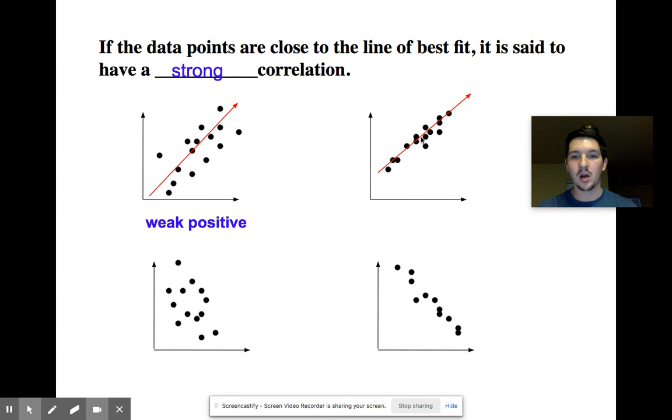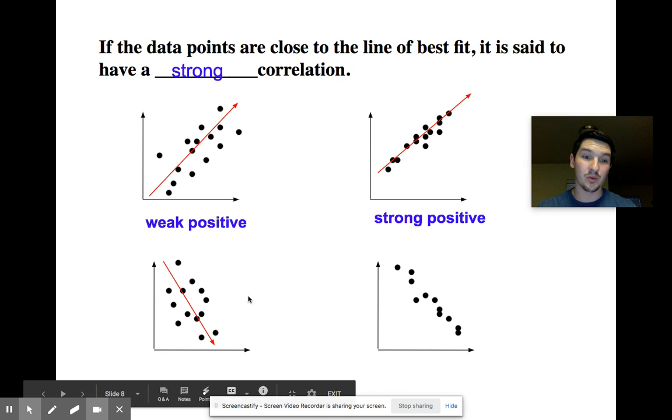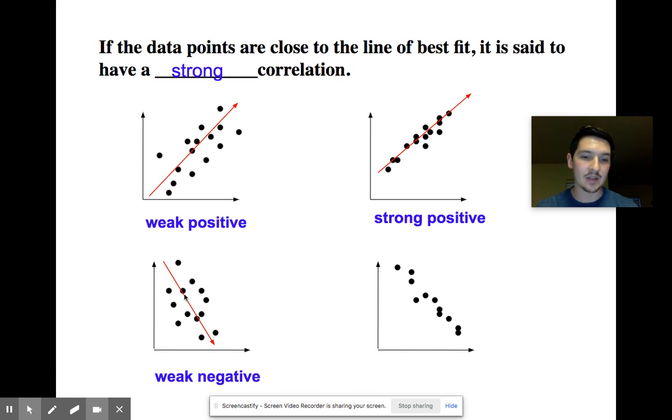This one here, our points are going to be closer to that line, so we have a strong positive. This one here is a pretty weak, almost to a no-correlated scatterplot. But we have a weak negative scatterplot here. And then this one here, we have a strong negative correlation on our scatterplot.